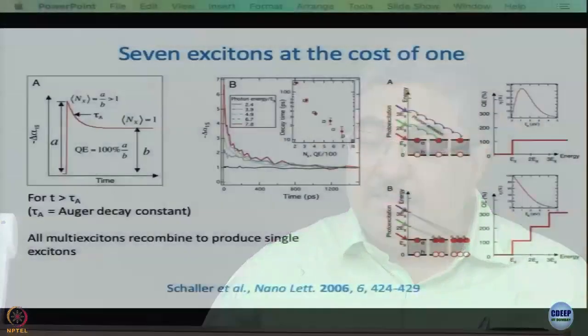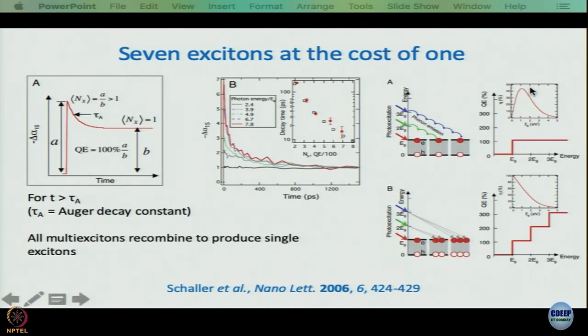We kept thinking that we generate one exciton and somehow that exciton will give us one charge carrier. It is not necessary — they can recombine, and they will recombine. The competition always is between recombination of electron and hole by themselves and their separation by applying a potential difference. So 0.44 is the best one can do for efficiency of charge carrier generation in bulk.